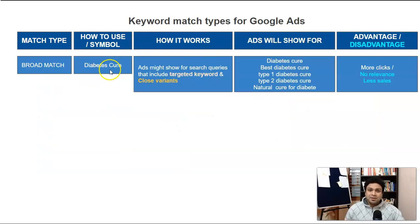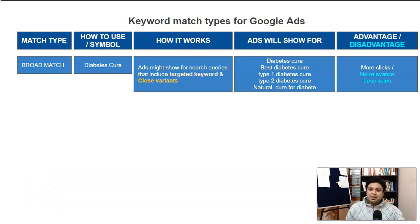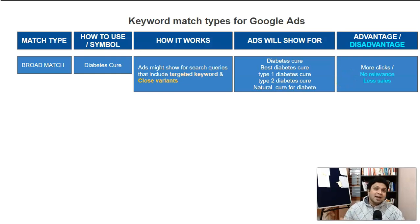The advantage of using broad match is you're going to get more and more clicks because your ad is visible to a lot of keywords and a lot of people searching different terms. But the problem is those keywords are not relevant — they're not targeted audience, not buyer-intent audience — so you'll get less sales. More clicks but many disadvantages with broad match.